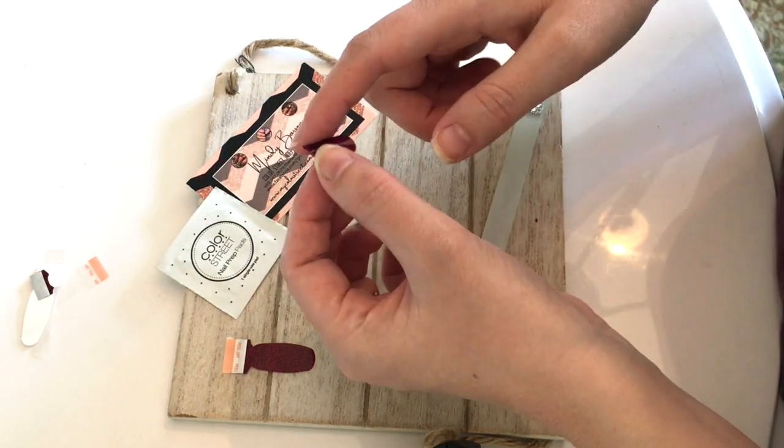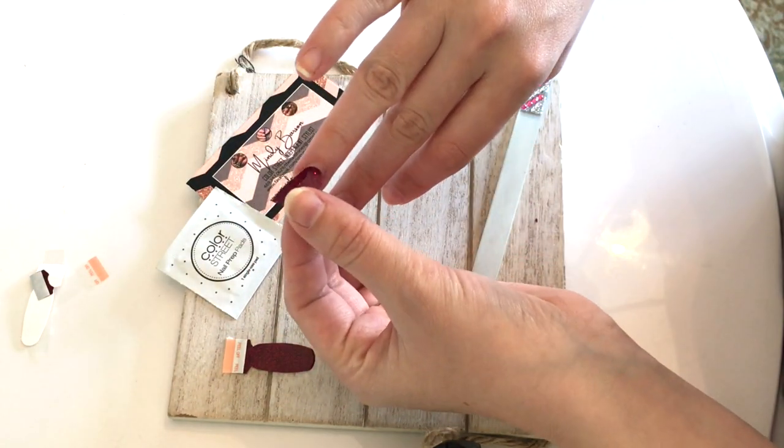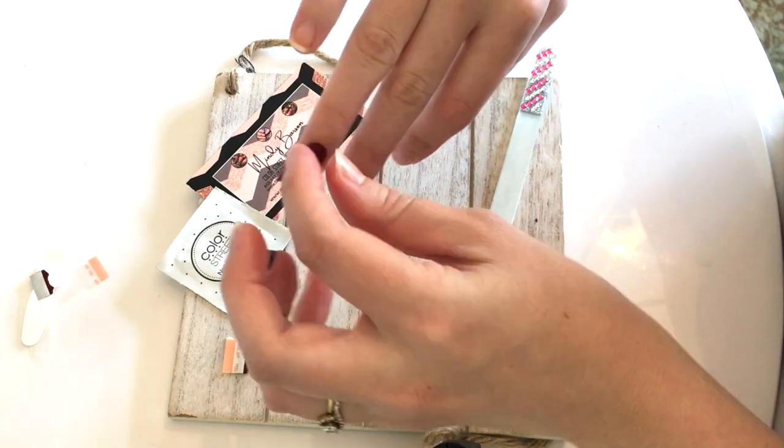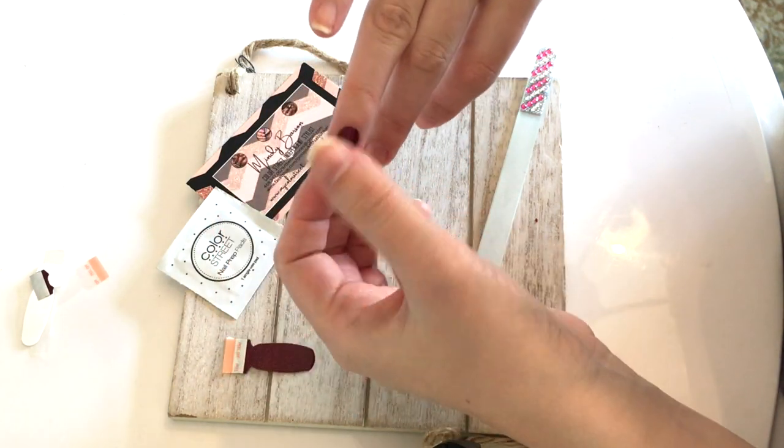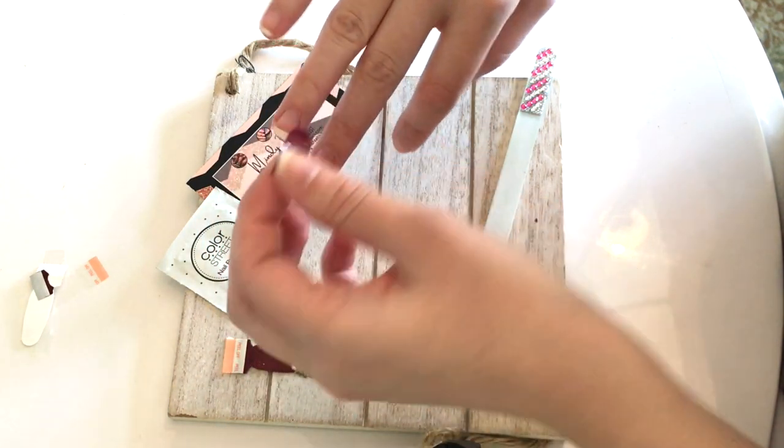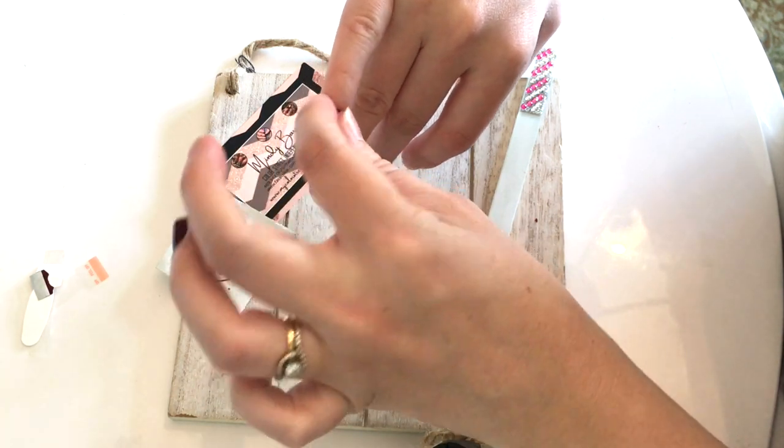Now you can use the strip, turn it around and use it for the other ring finger or pinky or pointer. It may not fit completely, so maybe I'll go to my pinky.